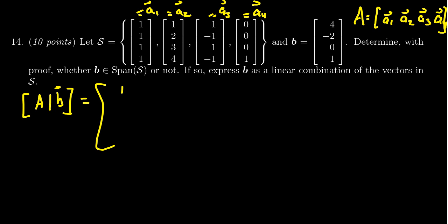So copying it down, we get the first vector A1 is 1, 1, 1, 1. A2 is 1, 2, 3, 4. A3 is 1, negative 1, 1, negative 1. And then A4 is 0, 0, 0, 1. We augment that with B: 4, negative 2, 0, 1.